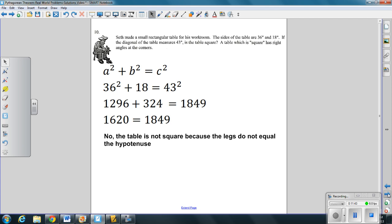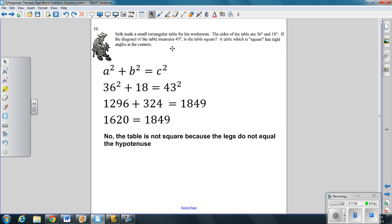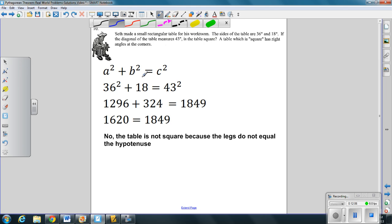Finally, number 10, I decided to leave all the work open here for you. What this problem is asking you is if these three numbers given, 36, 18, and 43, do in fact make a square or a right triangle. So what it's saying is does 36 squared plus 18 squared, does it equal, question mark, does it equal 43 squared?